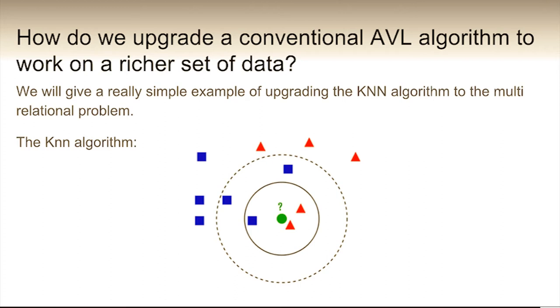So how would we go about upgrading a conventional attribute value learning algorithm to work on a richer set of data? We'll give a really simple example of upgrading the KNN algorithm to the multi-relational problem. So we have an illustration here of the KNN algorithm. And it's a lazy algorithm which classifies an instance by a vote of its K nearest neighbors. So if our instances are represented by two-dimensional vectors, so we have say X1 and X2, we could plot them like this and use a Euclidean distance to work out the nearest neighbors.